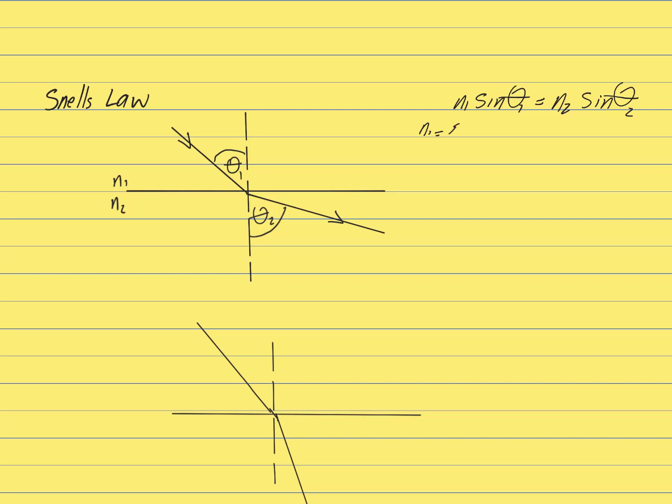N1 is the refractive index of the first media. N2 is the refractive index of the second media. Theta 1 is the angle of incidence. Theta 2 is the angle of refraction.